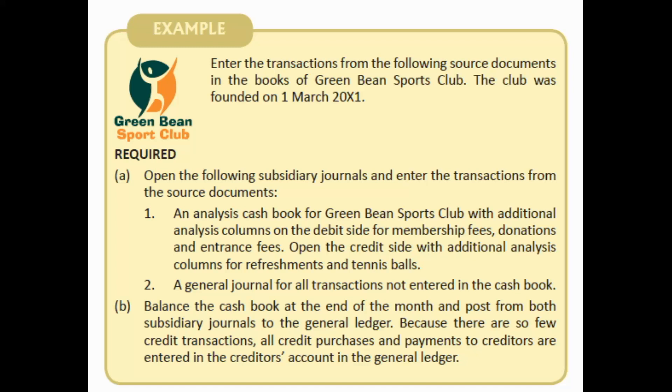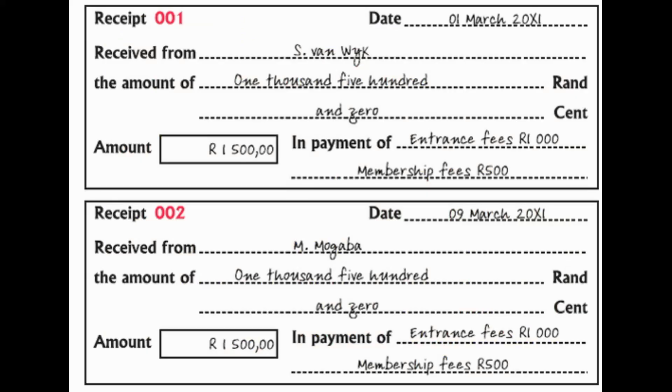For part B, balance the cash book at the end of the month and post from both subsidiary journals to the general ledger. Because there are so few credit transactions, credit purchases and payments to creditors are entered in one creditors account in the general ledger. We're not going to open an account for each individual creditor — all creditor transactions go into that one account.